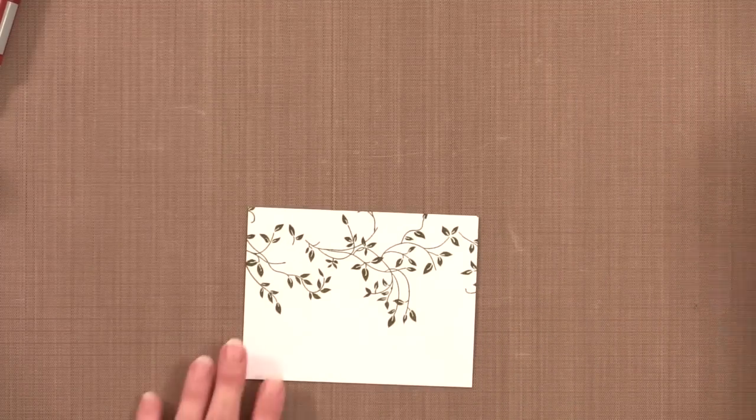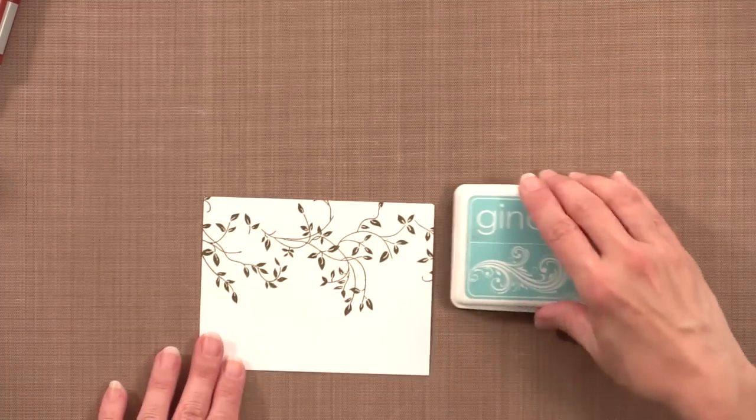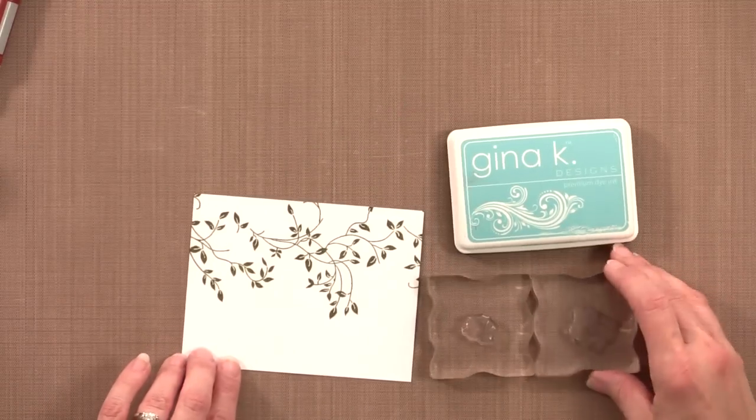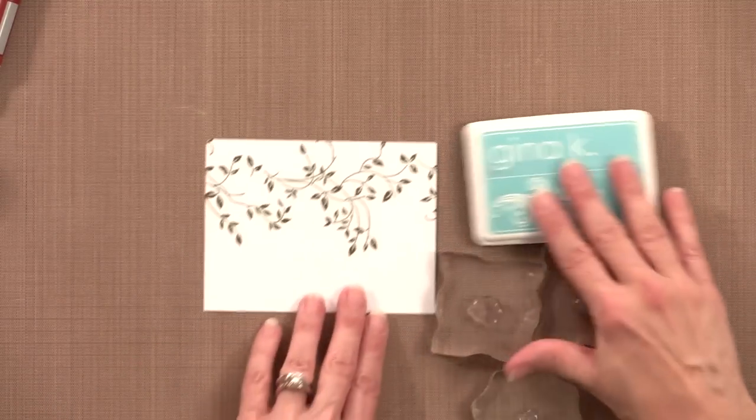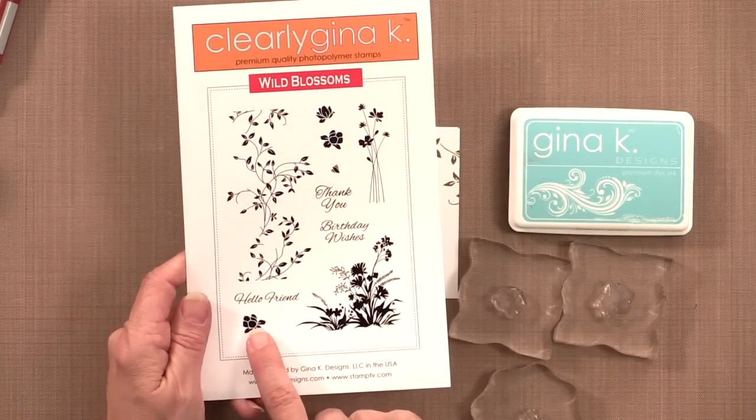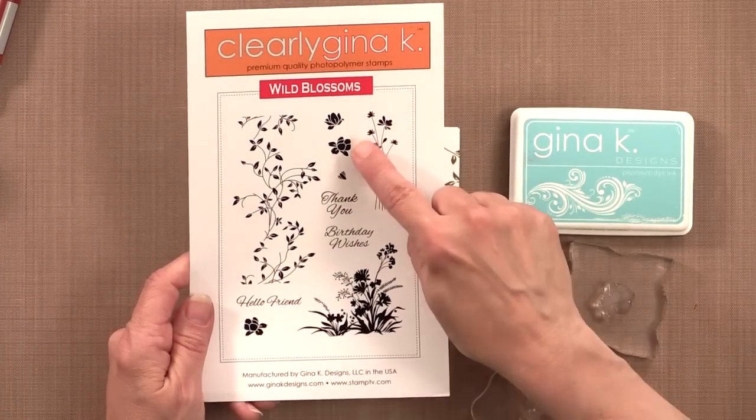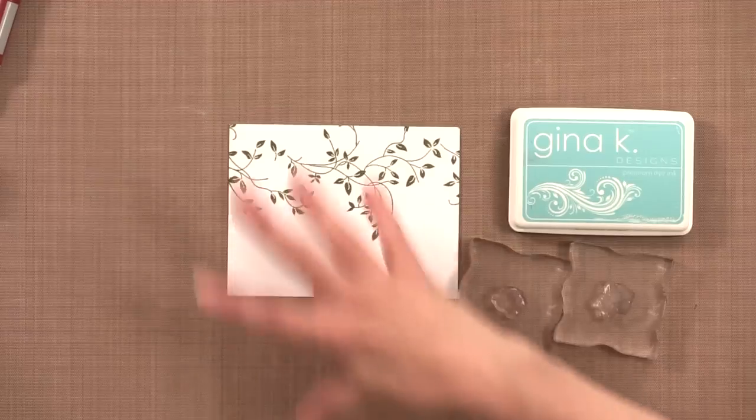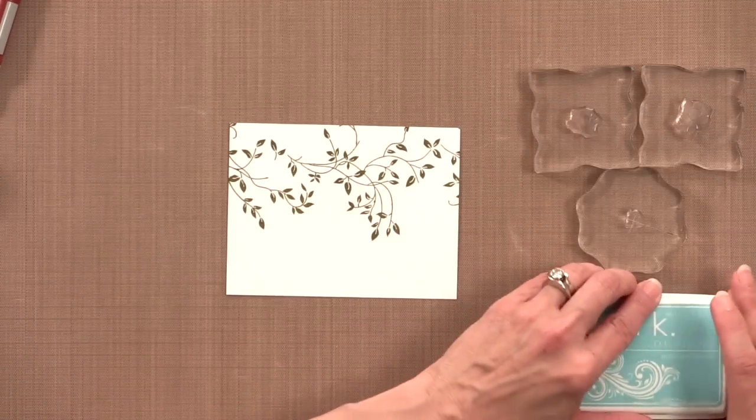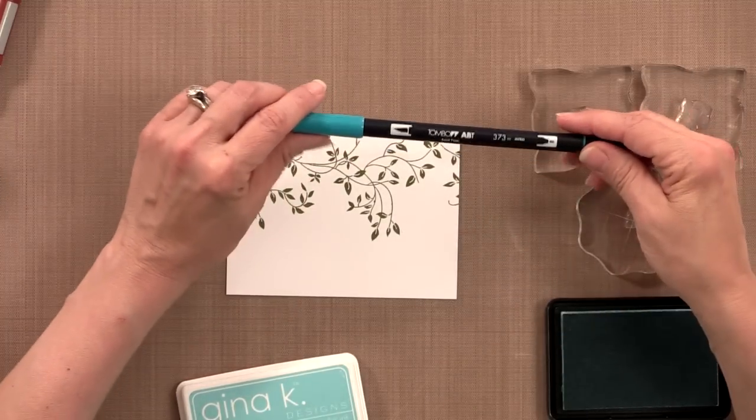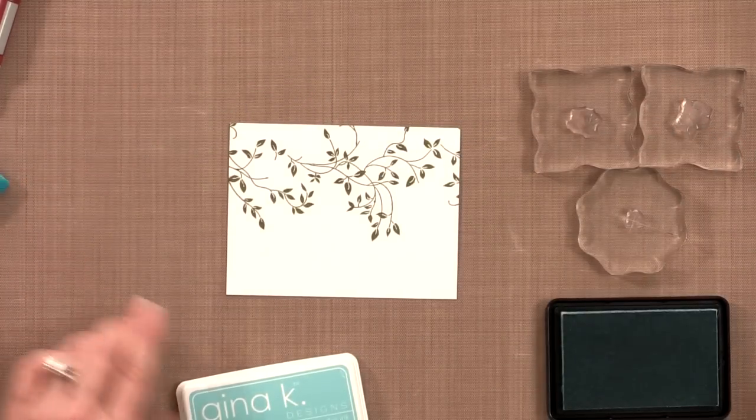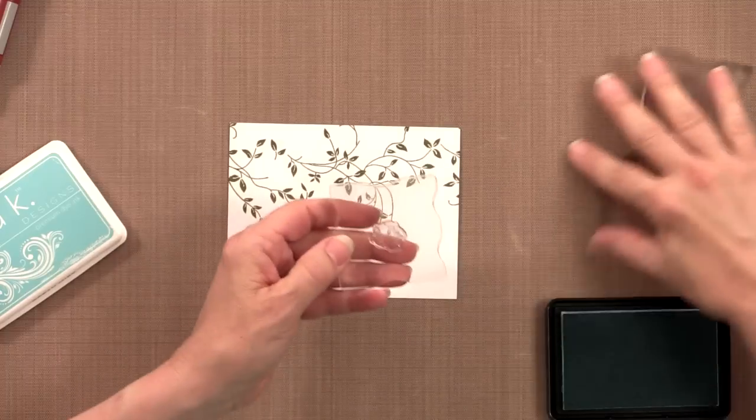All right my next step is to take some of this ocean mist ink and I have three of the different flowers from the wild blossom stamp set. So the ones that I'm using are these three up here and you can use this one too. This is the opposite direction of this one but I don't have too many areas to stamp here so this will be enough. So I'm also going to open up my marker. This is again Tombow marker 373 and I'm going to start with one of the flowers.